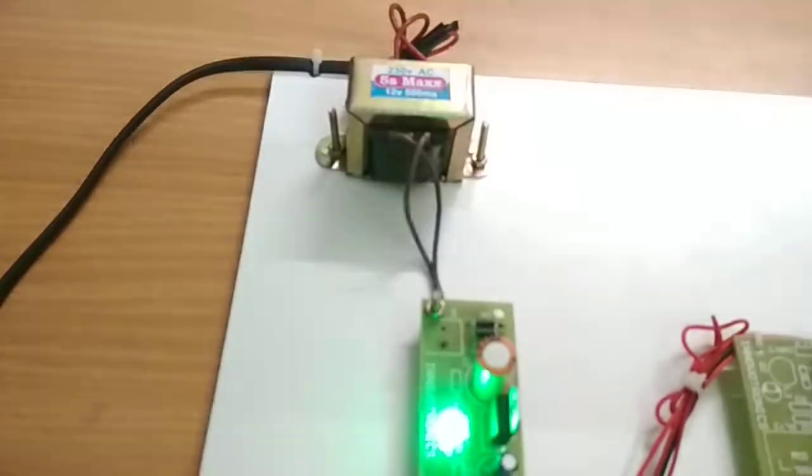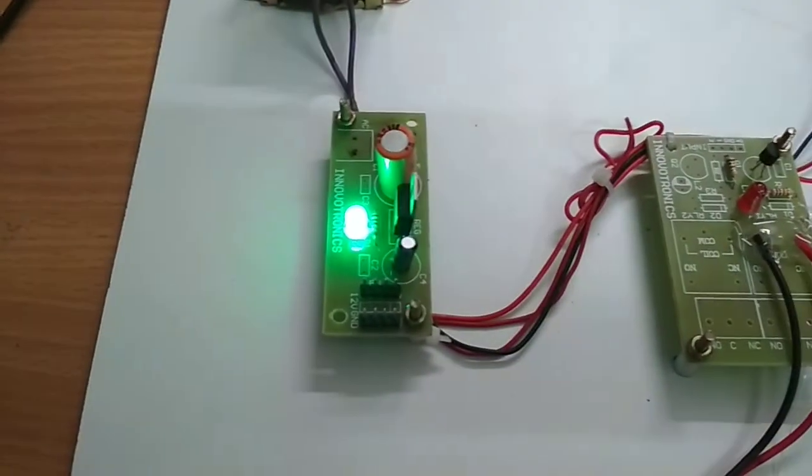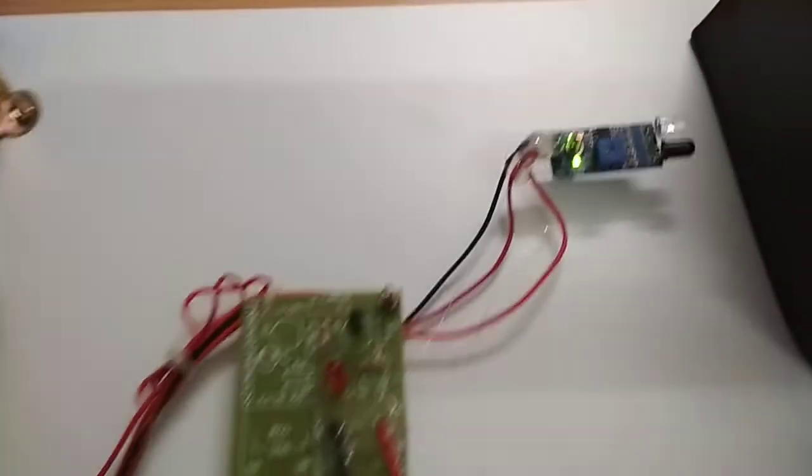So in this project we are using transformer, then rectifier unit, then relay unit, 12 volt buzzer, then IR sensor.